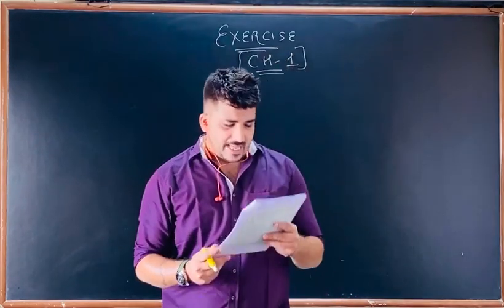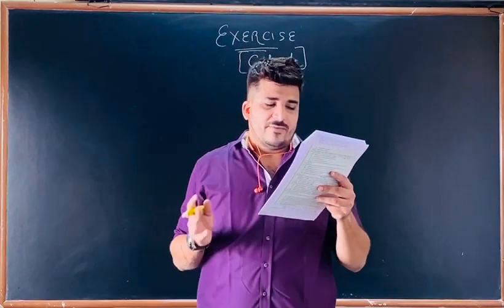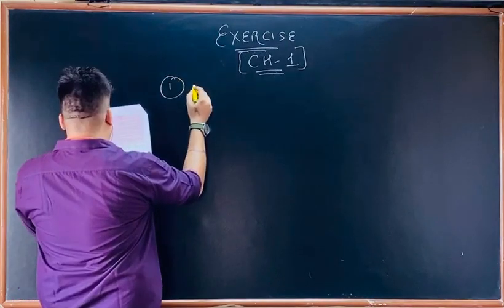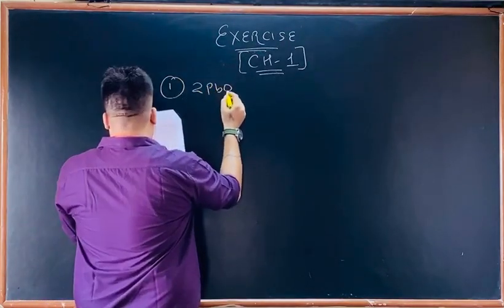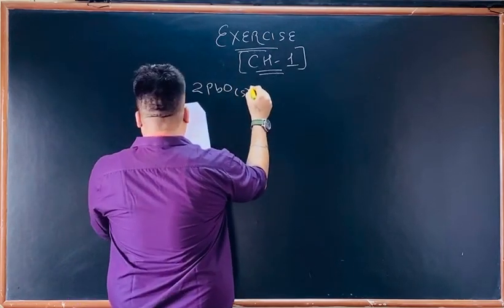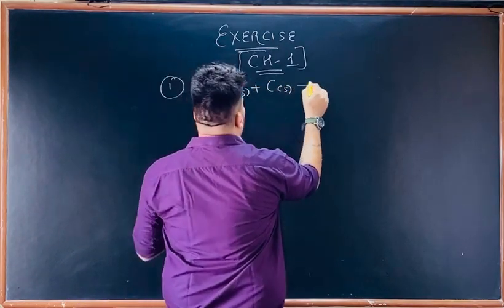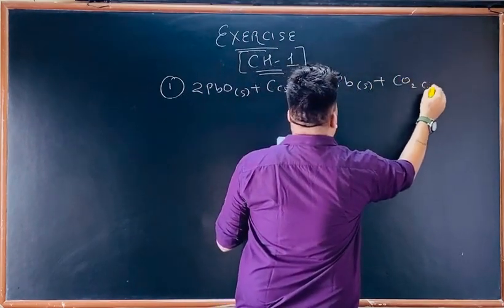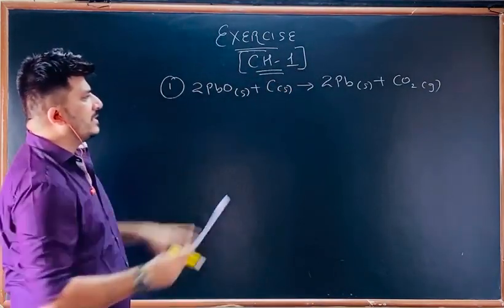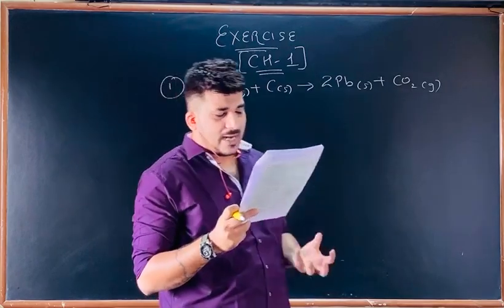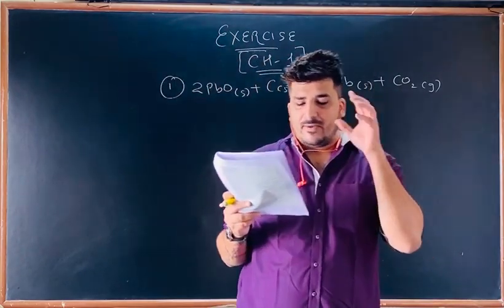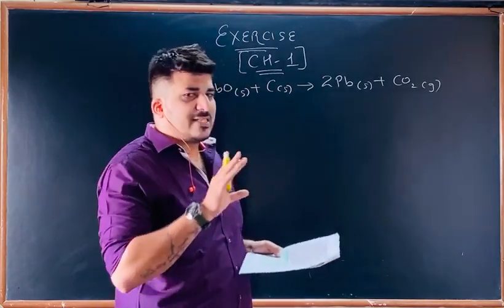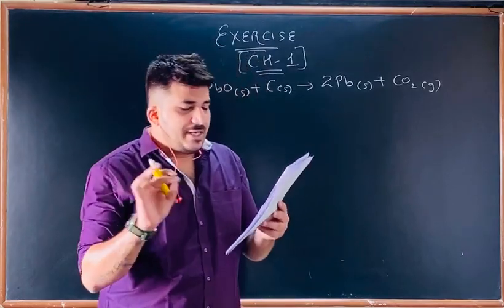Let's proceed with the exercise. The first MCQ: which of the following statements about the reaction below are incorrect? The reaction given is: 2PbO (solid) + C (solid) → 2Pb (solid) + CO₂ (gas). They have given four options A, B, C, D. First option: lead is getting reduced — we need to clarify which of the statements are incorrect.